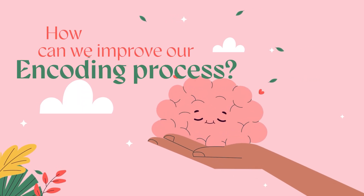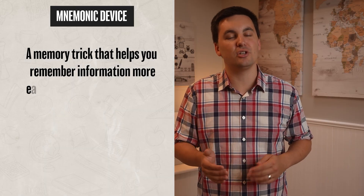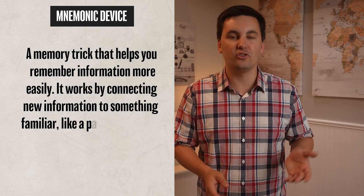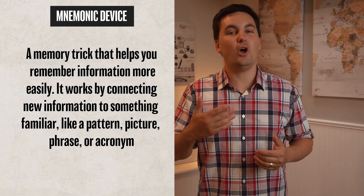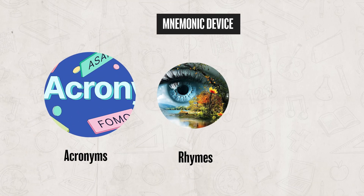Now that we've reviewed how information can be encoded, let's shift gears and talk about how we can improve our encoding process. There are a variety of encoding strategies you can use. The first is using a mnemonic device, which helps people remember information more easily by creating associations with new information, resulting in deeper processing. Mnemonic devices often use patterns like acronyms, visual images, rhymes, or associations to connect new information with something more familiar.